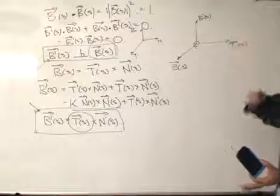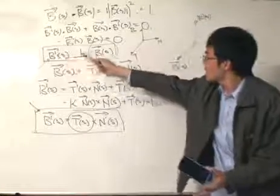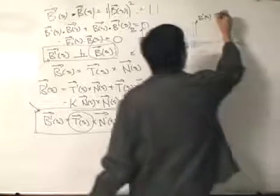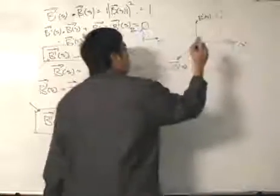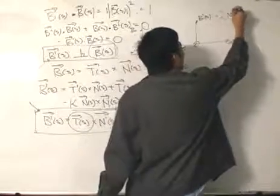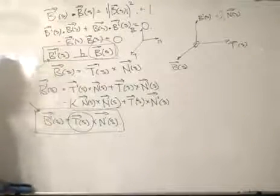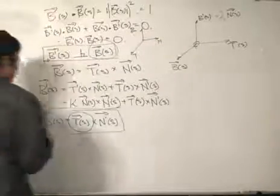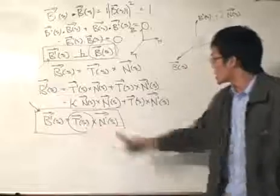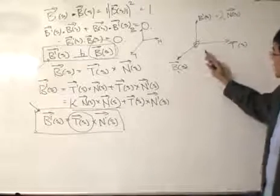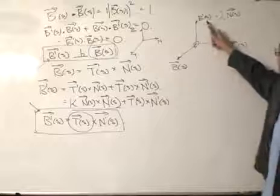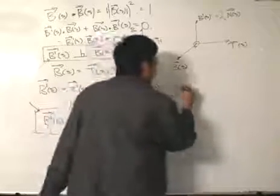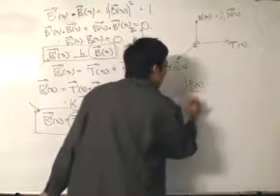Bear with me — given that the binomial vector and the unit tangent vector are perpendicular, and given that the first derivative of B is perpendicular to B, that means the first derivative of the binomial vector must be a scalar multiple of the unit normal vector. This is how we make sense of the two definitions to arrive at this result: the first derivative of B is a scalar multiple of N, and writing it formally: dB/ds equals negative torsion times N.